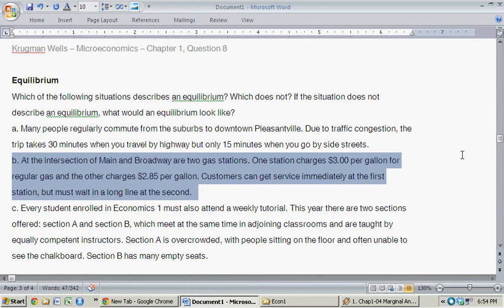So this kind of sounds like an equilibrium to me or potentially is. Once again, an equilibrium is a situation such that no one benefits by deviating. So they might be willing to spend the extra $0.15 per gallon in order to wait in a shorter line.